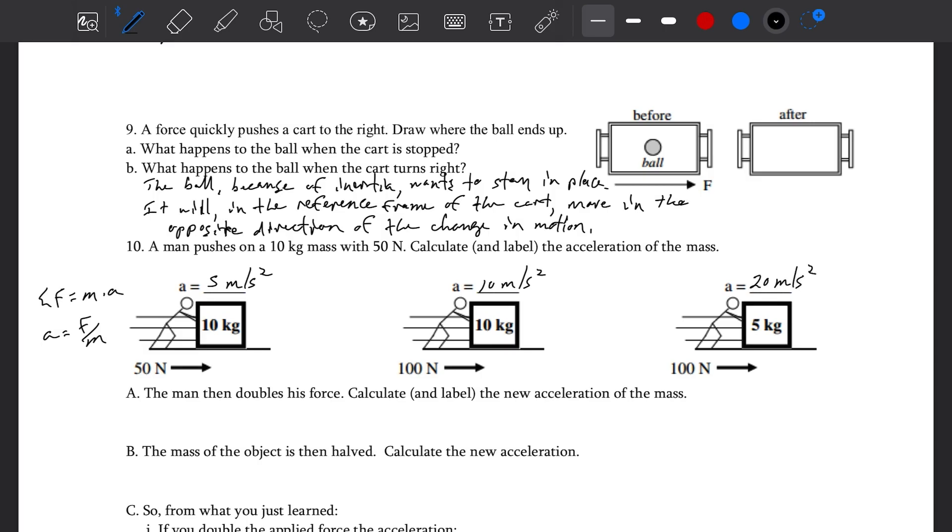The man then doubles the force. Well, let's look at the relationship between acceleration and force. They're directly related. If you double F in the equation A equals F over M, doubling force doubles the acceleration. So we need to calculate and label the new acceleration of the mass for each one. So for the first one goes from 5 to 10. Second one goes from 10 to 20. Third one goes from 20 to 40.